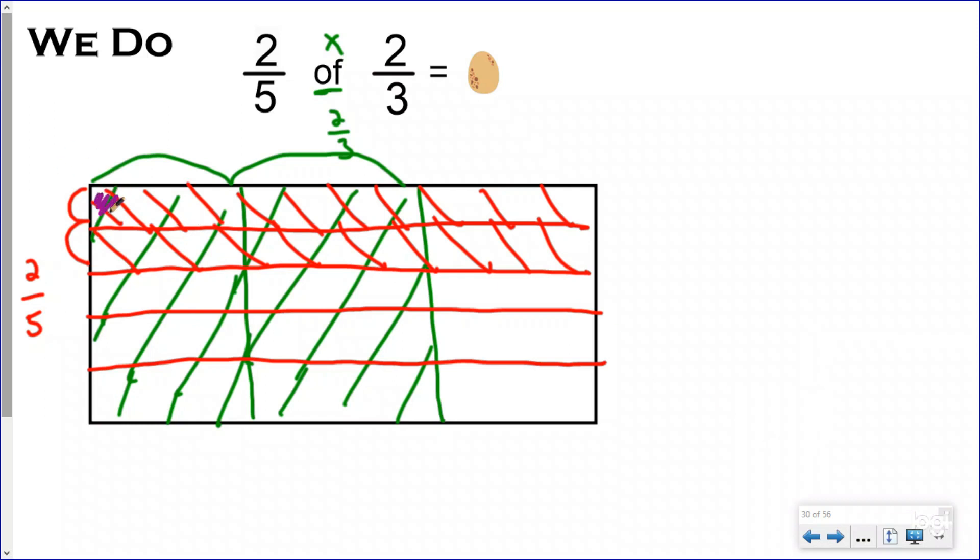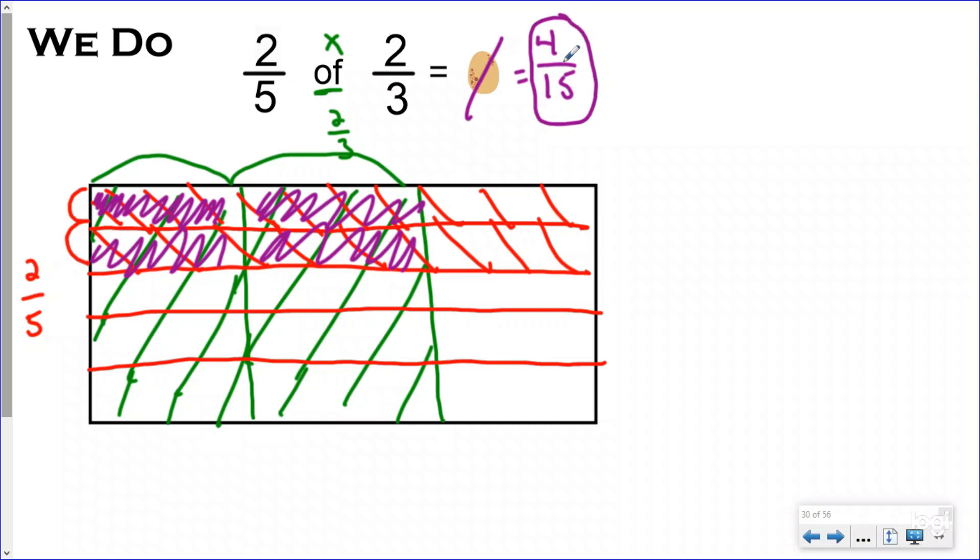Now I see that I need to count the pieces that were shaded in twice, and so I see right here that there were four pieces shaded in twice, and my new denominator is 15, and so out of the egg comes a four-fifteenth fraction dinosaur. We have uncovered a new species, the purple four-fifteenths. And I can see that I cannot simplify this, so my final answer is four-fifteenths. When I found out two-fifths of two-thirds, that gave me the fraction four-fifteenths.